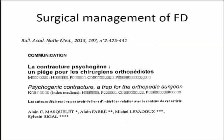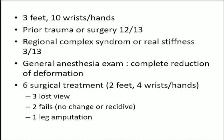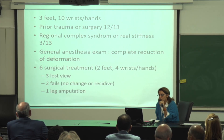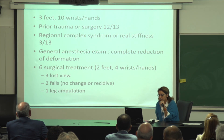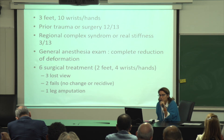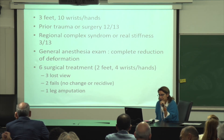There are two very interesting papers about surgical management of functional dystonia. One is from a Regal team with a series of 13 patients who underwent surgery. There were three feet and ten wrists or hands, with a history of prior trauma or surgery in 12, associated with complex regional syndrome or real stiffness in three cases. For all, there was complete reduction of deformity under general anesthesia. Six underwent surgical treatment — two feet and four wrists or hands — with three lost to follow-up, two failures with no change after surgery or recurrence, and one leg amputation.